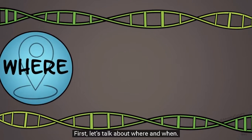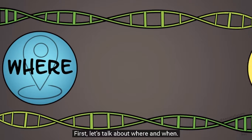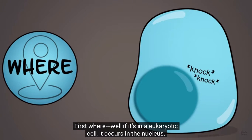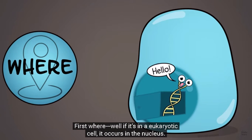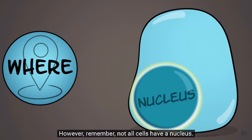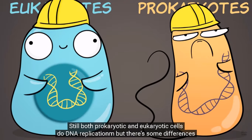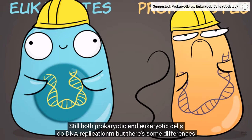First, let's talk about where and when. Where: if it's in a eukaryotic cell, it occurs in the nucleus. However, remember, not all cells have a nucleus, such as prokaryotic cells. They don't have a nucleus. Still, both prokaryotic and eukaryotic cells do DNA replication, though there are some differences between the two that this clip doesn't go into.